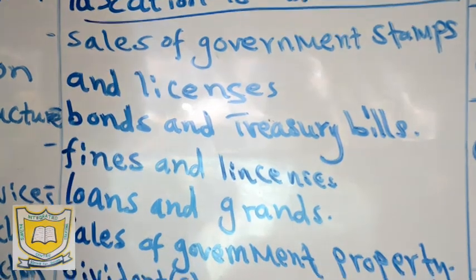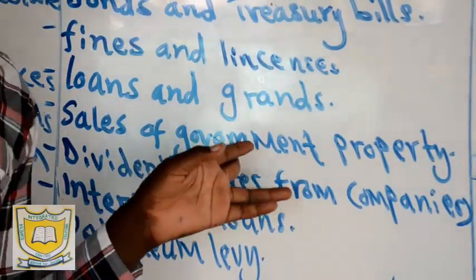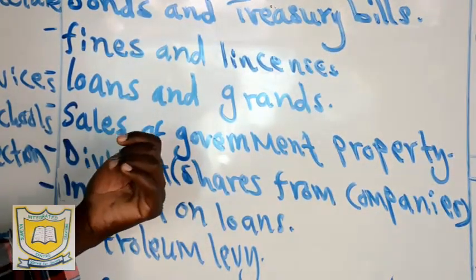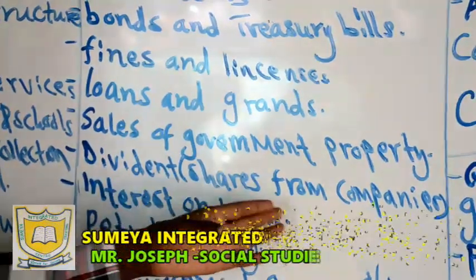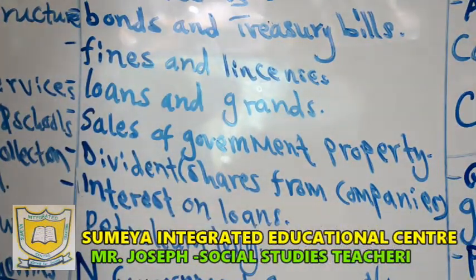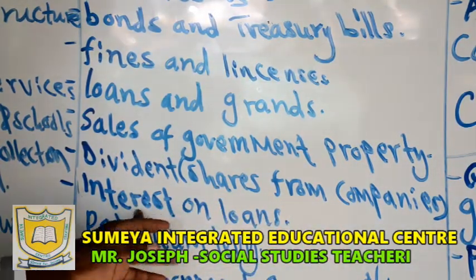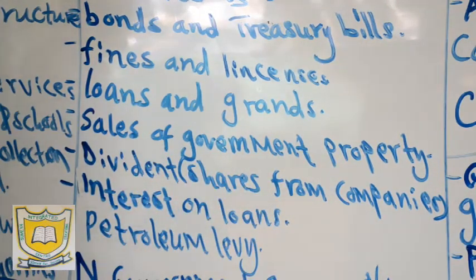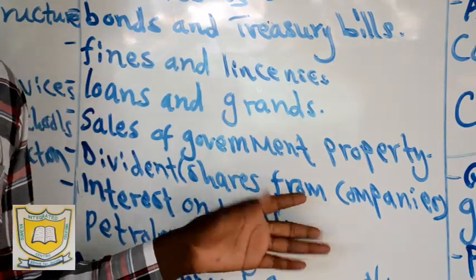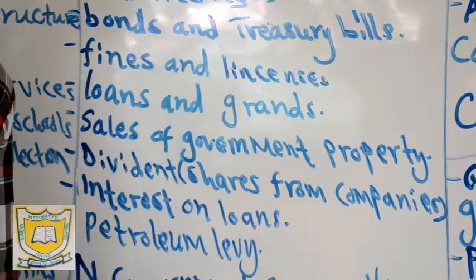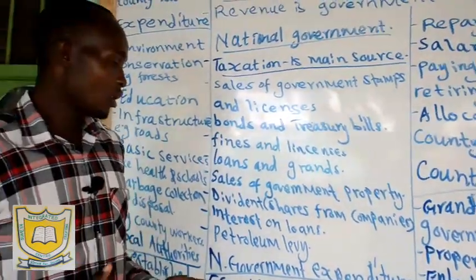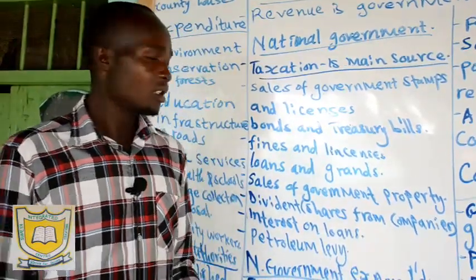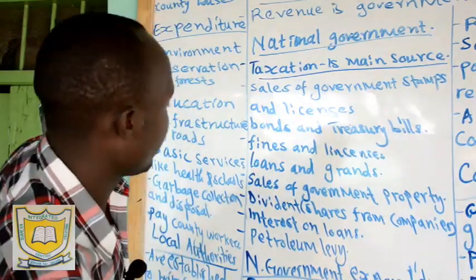Then we have sales of government property — it can be land. When the government sells property, either land or another asset, that gives the government revenue. Then we have dividends or shares from companies. For example, the government has some shares in companies like Safaricom and KPLC — Kenya Power and Lighting Company. At the end of the year, the government is given dividends from those companies.